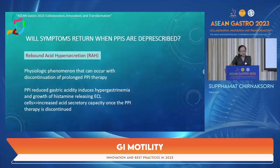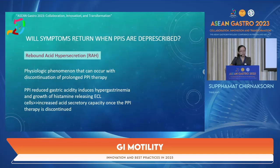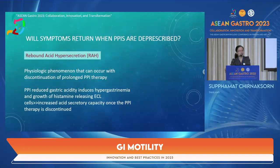Rebound acid hypersecretion is a physiologic phenomenon that can occur when prolonged PPI therapy is discontinued. PPIs reduce gastric acidity, which induces hypergastrinemia and growth of histamine-releasing enterochromaffin-like cells. If PPIs are stopped suddenly, these cells can increase acid secretory capacity, causing upper GI symptoms. This does not occur in all patients, but patients should be aware and may use minor antacid medication to manage symptoms.